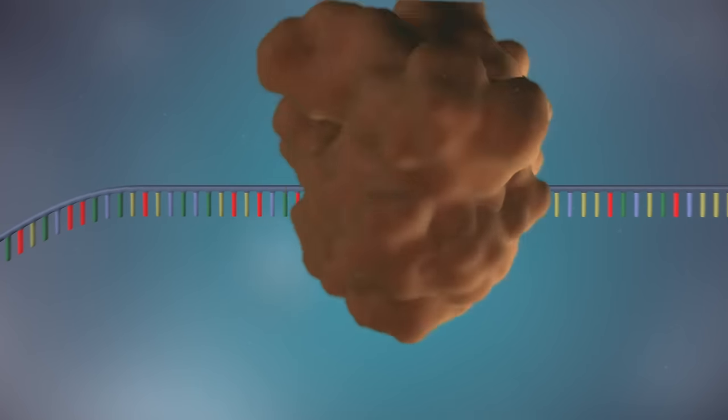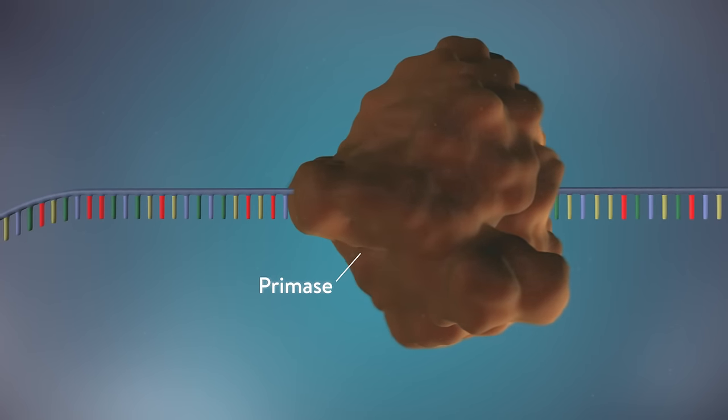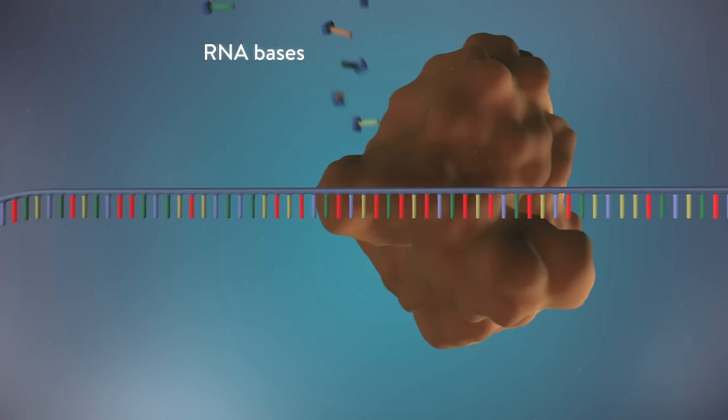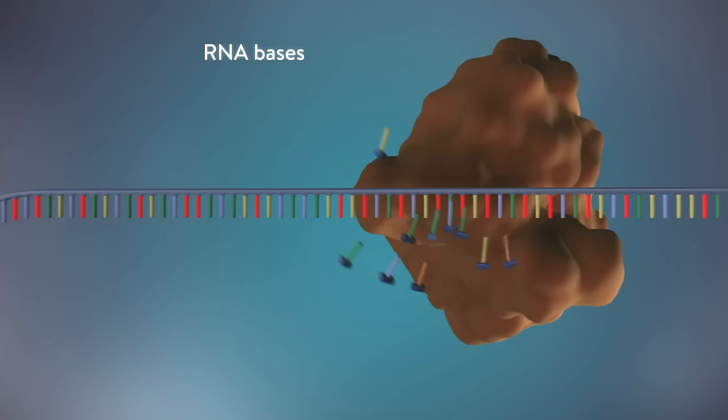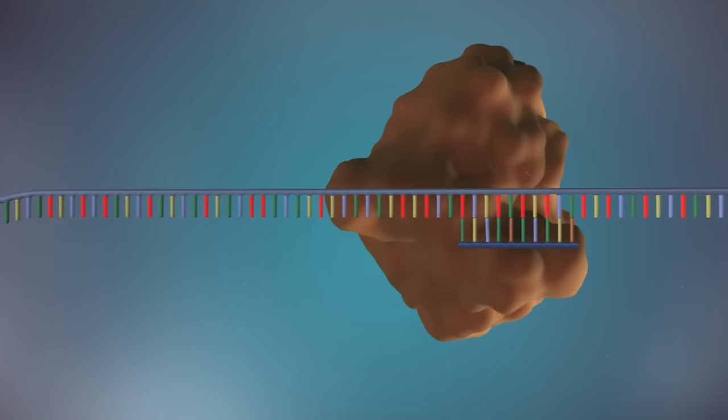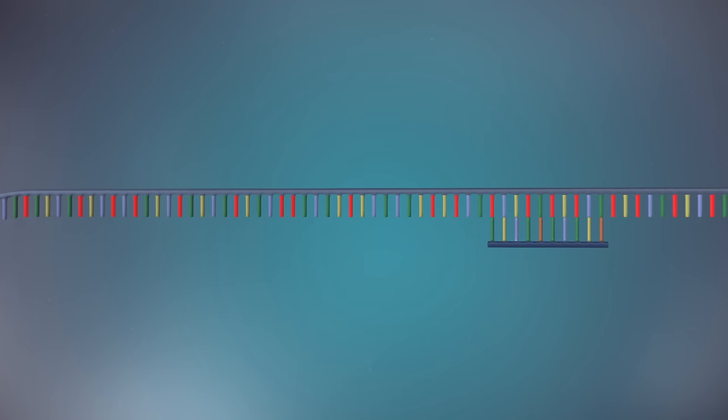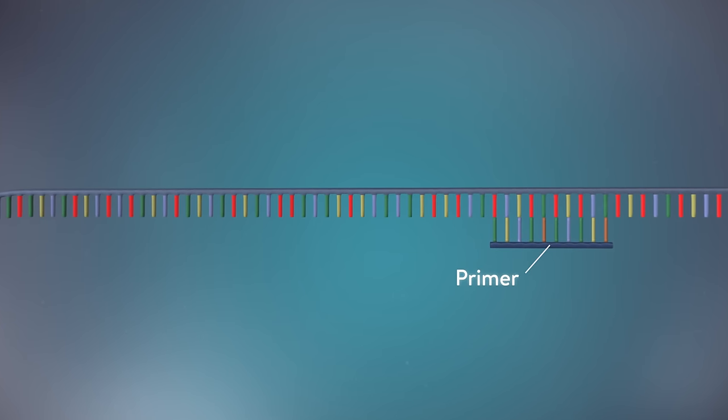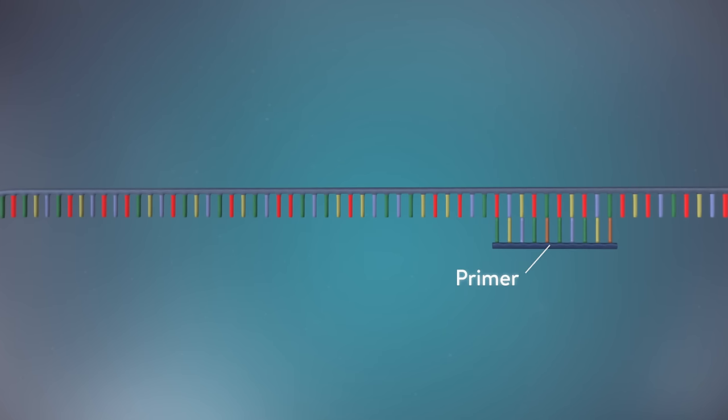An enzyme called primase starts the process. This enzyme makes a small piece of RNA called a primer. This marks the starting point for the construction of the new strand of DNA.